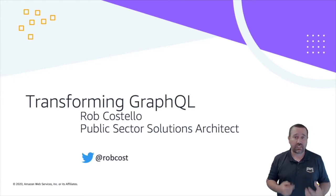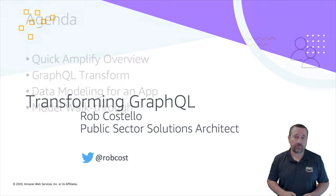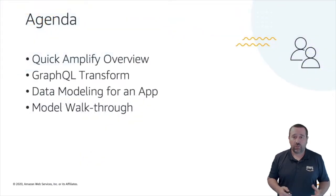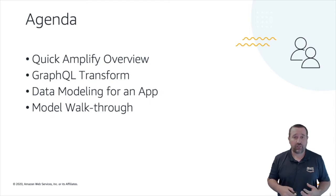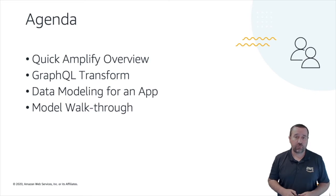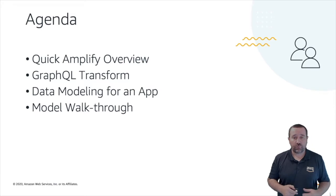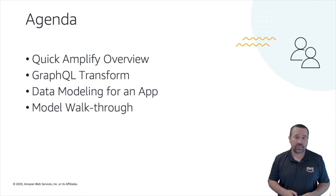This feature can help you accelerate your application development and integrate security and performance optimization features into your apps. We're going to do a quick overview of Amplify, then dive into that GraphQL Transform feature. We're going to explore how a data modeling approach can be used to speed up your application development, automate some infrastructure deployment requirements, and walk through some GraphQL Transform directives you'll commonly use when building Amplify-based apps.